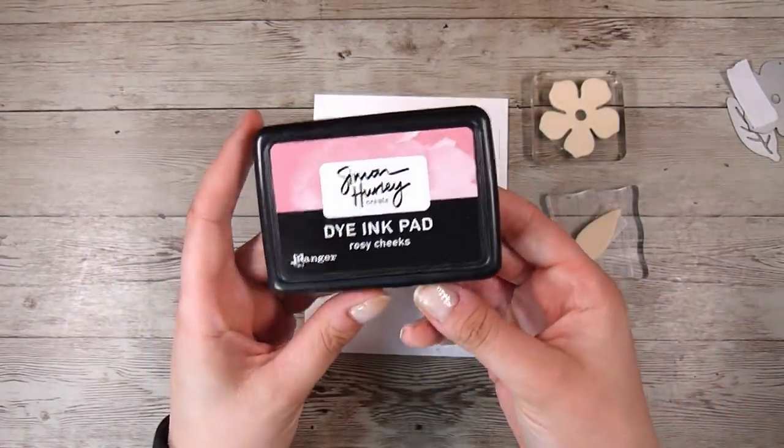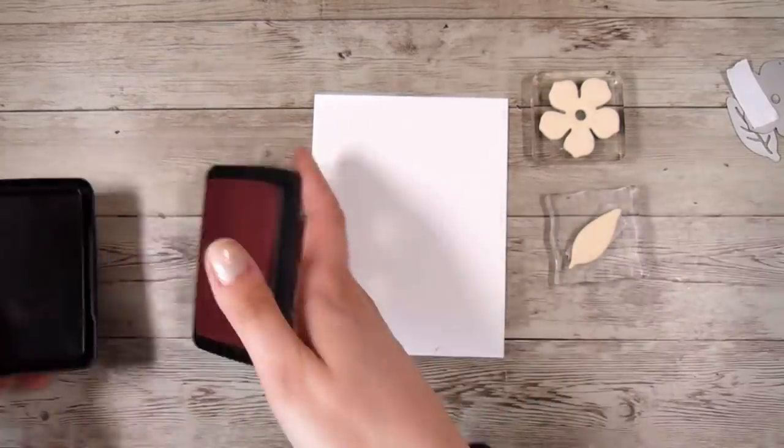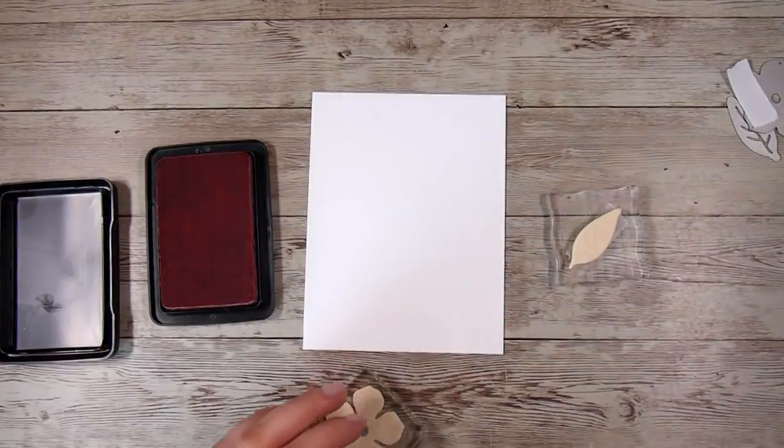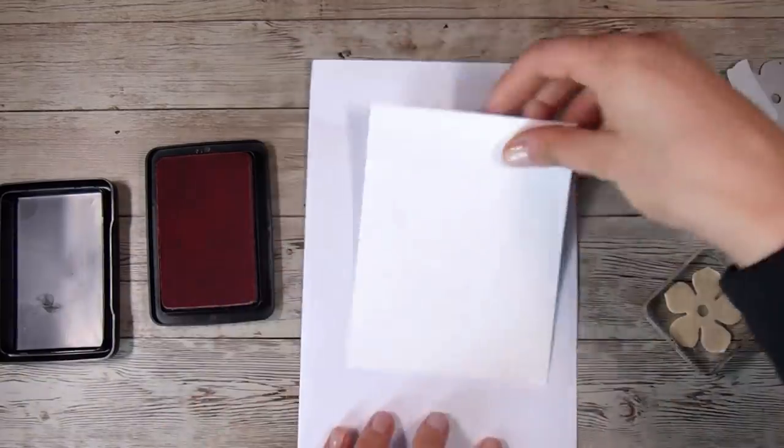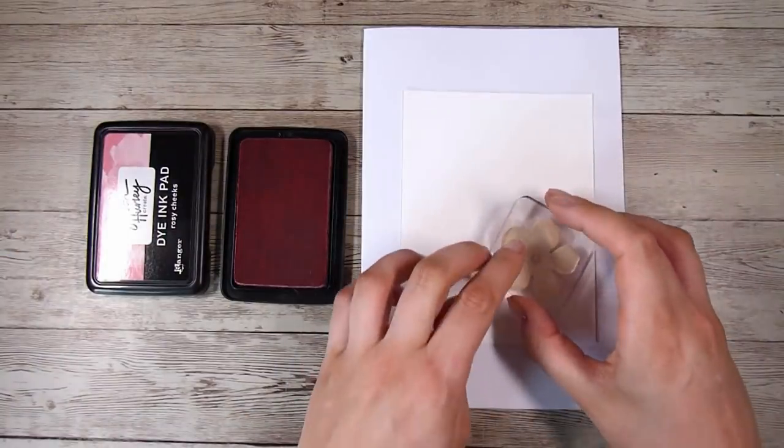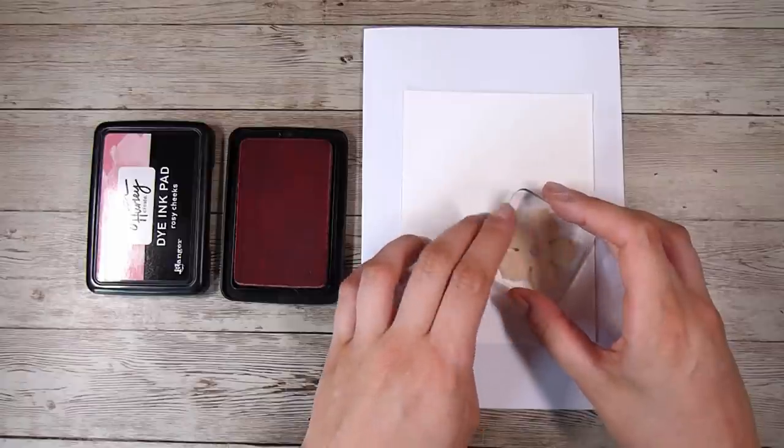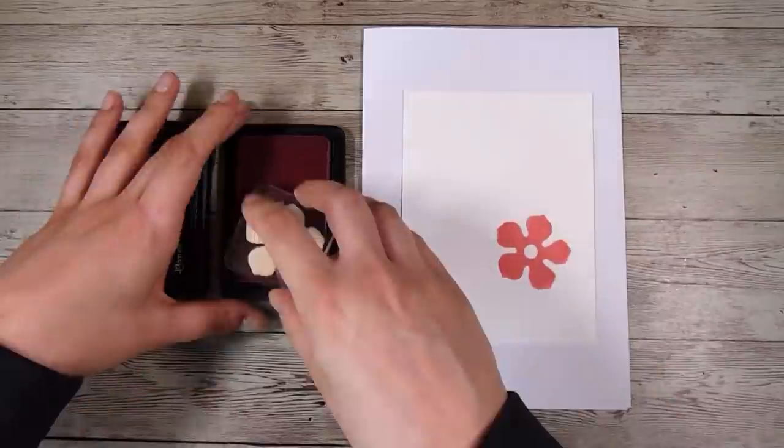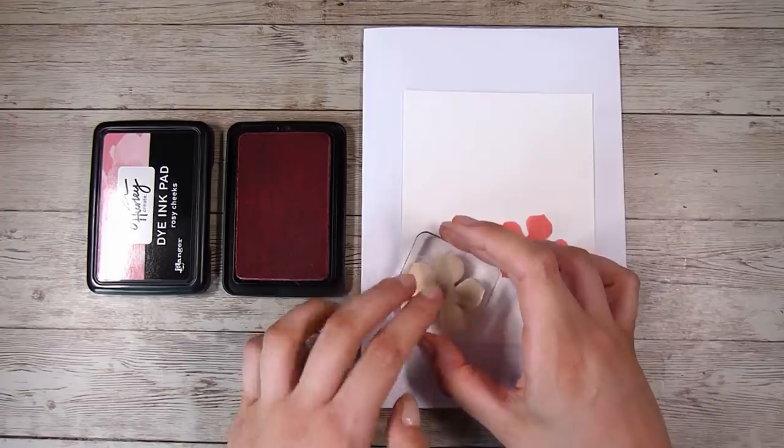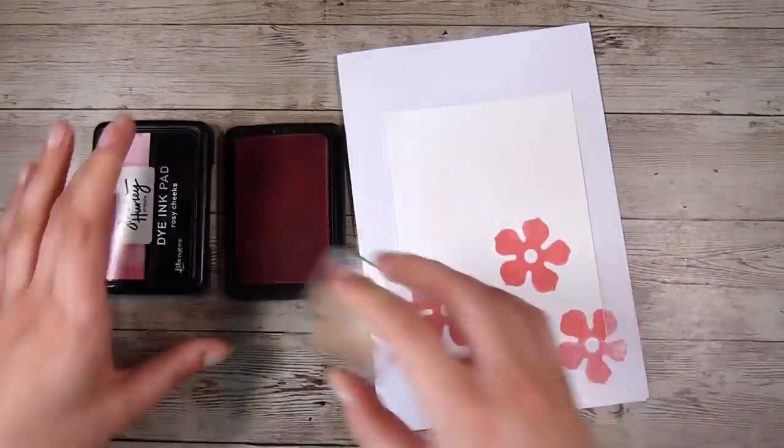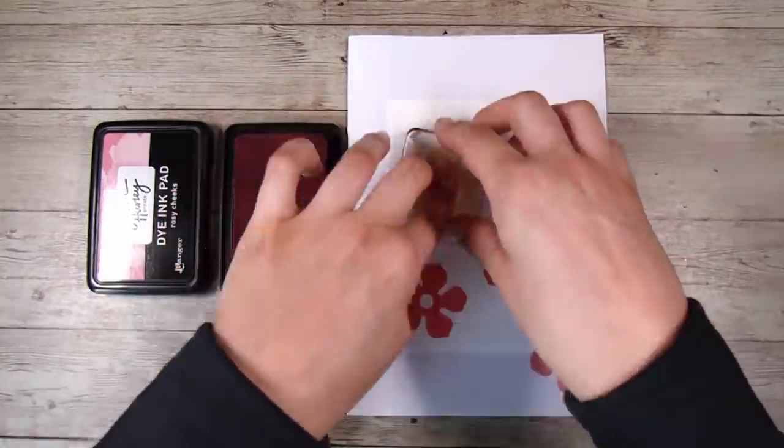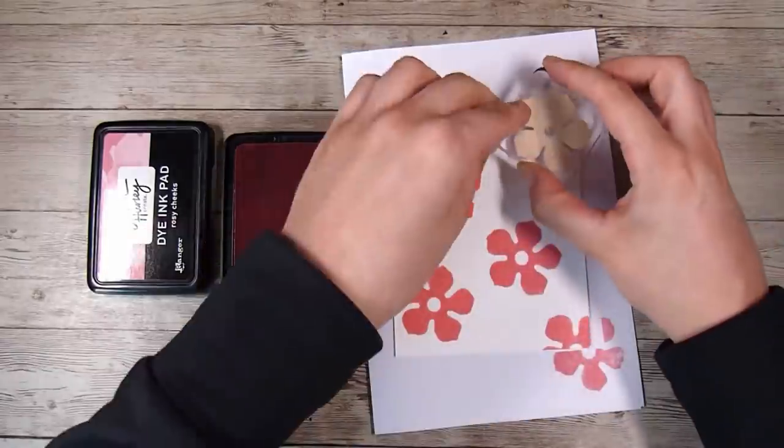I use some adhesive, like some double sided adhesive to stick these onto my blocks or some removable adhesive, stick it onto my little acrylic blocks. And then I'm going to be stamping here using some rosy cheeks from the Simon Hurley inks. This is just a dye ink. And all I do is just use it like a normal stamp.